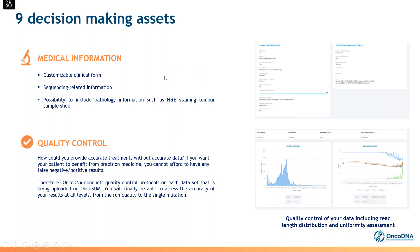The second section is quality control. We want to provide accurate data and avoid false negative or false positive results. OncoDNA conducts quality control protocols on each dataset uploaded on KDM. This QC section can only be performed if we start from raw data — FASTQ or BAM files — but not from VCF files.